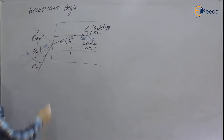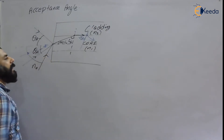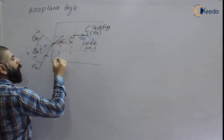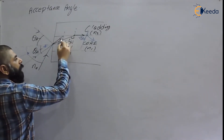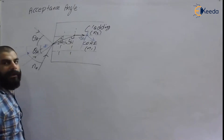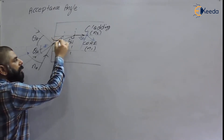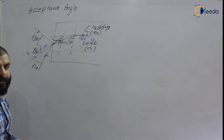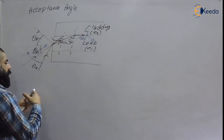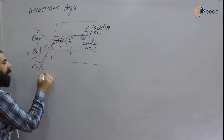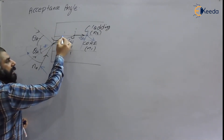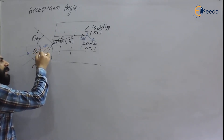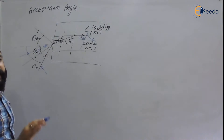If the angle of incidence is more than the acceptance angle, the refracted ray inside the core will hit the core-cladding interface at an angle less than the critical angle, so total internal reflection will not take place. Therefore, our condition is that the angle of incidence at the input can be at most equal to the acceptance angle.